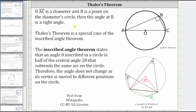Looking at the diagram on the right, notice how AC is the diameter of the circle. Point B is a point on the circle where angle B has sides passing through the endpoints of the diameter, and therefore angle B is a right angle.